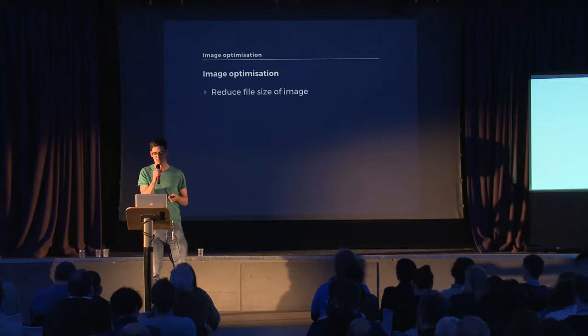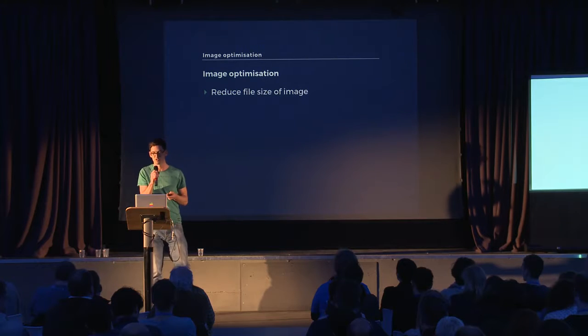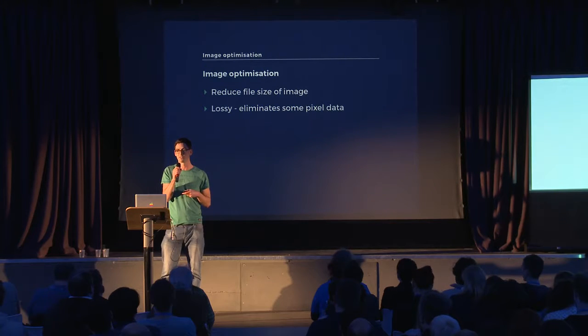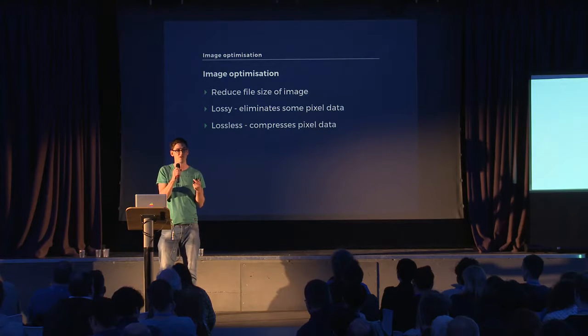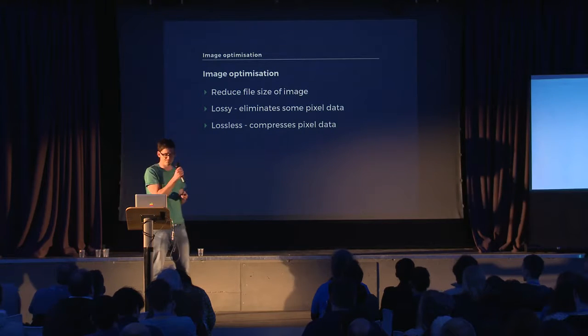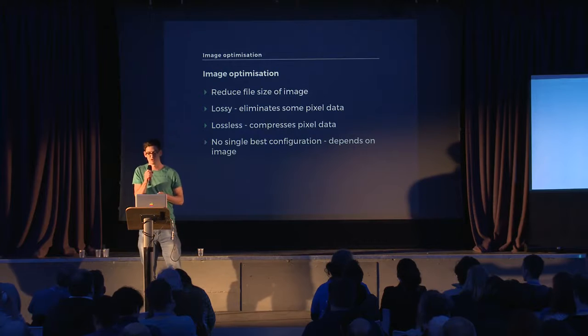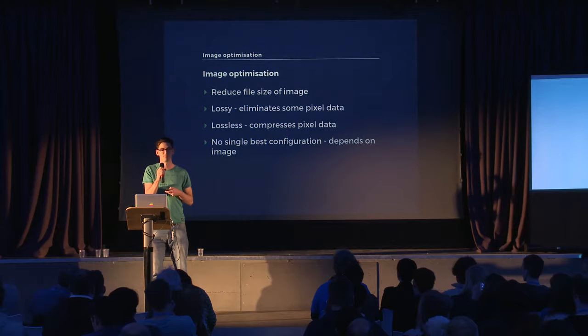First up, image optimization. What is it? It's a technique to reduce the file size of an image. There are two main types of compression. There's lossy compression, which eliminates some pixel data — this will actually change or degrade the quality of the image slightly. There's lossless compression, which just compresses the pixel data, so the image retains its quality and can also lose some metadata you don't necessarily need. There's no single best configuration when it comes to image optimization — it's all about the image you're using.